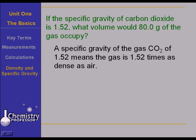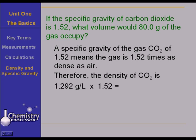A specific gravity of the gas carbon dioxide of 1.52 means that carbon dioxide is 1.52 times as dense as air. Or if you will, a volume of carbon dioxide is 1.52 times as heavy as an equal volume of air. Either way you want to think about it. So the density of carbon dioxide then is 1.292 grams per liter, the density of air, times 1.52 to give us 1.96 grams per liter as the density of carbon dioxide.